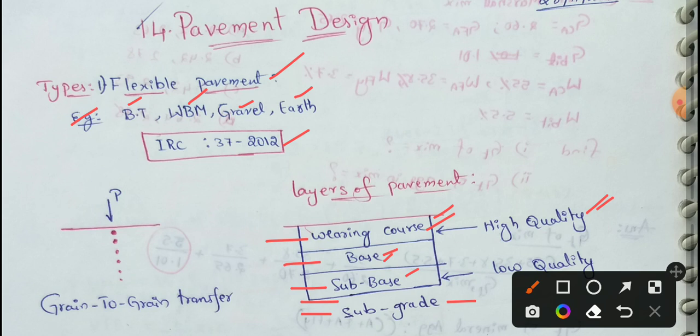Next, flexible pavement design is greatly influenced by subgrade strength. Subgrade strength, flexible pavement design is greatly influenced.